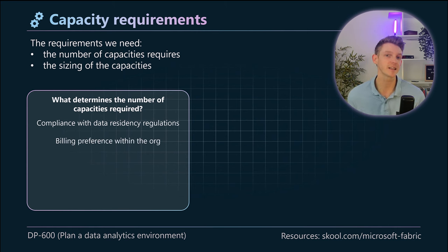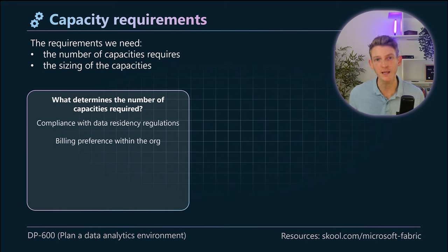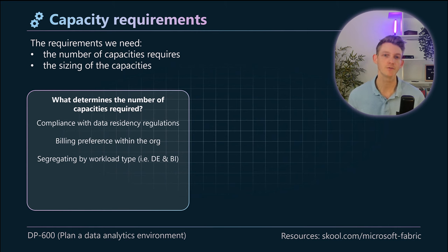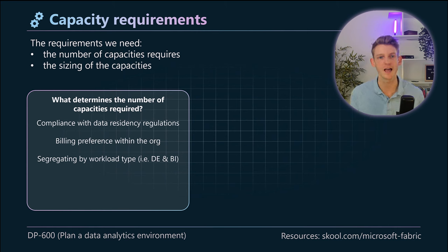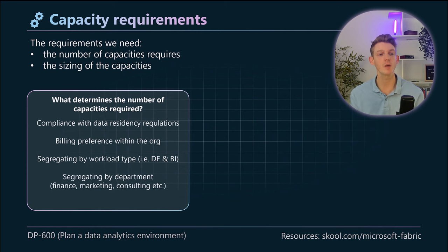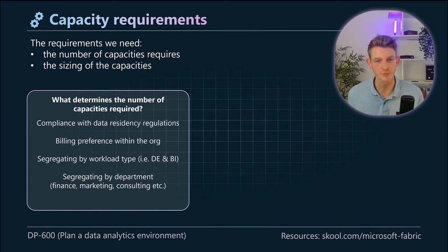Another thing that can impact the number of capacities is billing preference — the capacity is how you get billed in Fabric. Some organizations may want to separate billing between departments, so they might have one capacity for finance, one for the consulting division, one for marketing. Another factor is segregating by workload type. If you have heavy data engineering workloads, you might want those in a separate capacity so that BI performance on dashboards isn't impacted by heavy Spark or machine learning jobs running elsewhere. Some companies also like capacity aligned to departments by business preference.